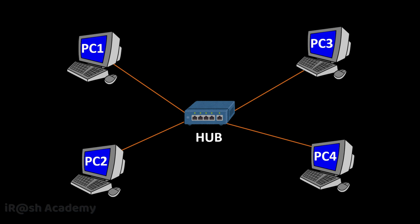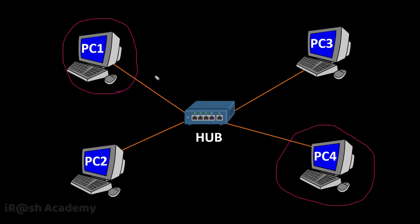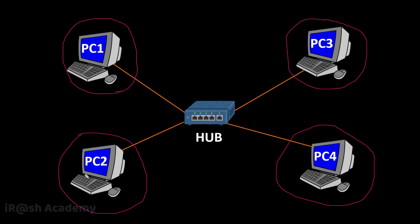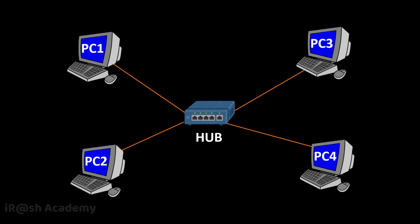Consider a network diagram with four computers — PC1, PC2, PC3, and PC4 — connected to a network hub. As per the broadcasting characteristic of a network hub, whatever data it receives on one interface, it will broadcast to every interface. So if PC1 wants to send data to PC4, the same data is broadcast to all ports, so PC3 and PC2 also receive it. Since PC2 and PC3 are not the destination, they ignore the data, and only PC4 processes it.